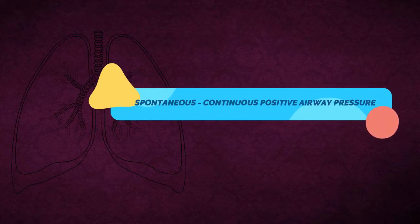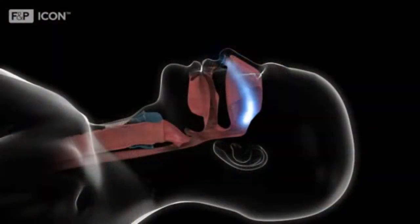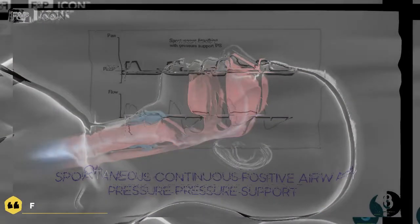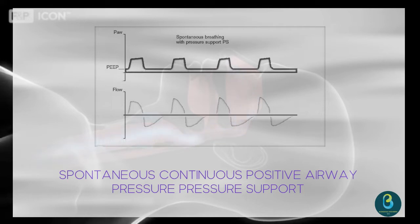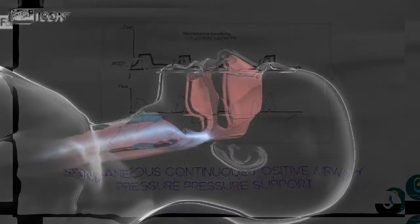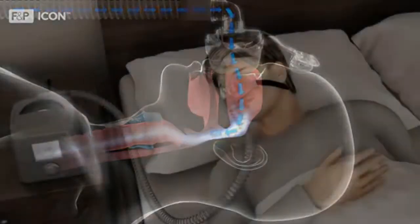Let's see the Spontaneous Continuous Positive Airway Pressure Support. In spontaneous CPAP, the patient breathes at the PEEP level. Compared to the atmospheric pressure, the airway pressure is increased during the complete breathing cycle — that is, during inspiration and expiration. If the patient is too weak to manage the complete breathing effort independently, there is the option of pressure support. Every detected inspiration attempt at PEEP level triggers a patient-triggered, flow-cycled, pressure-supported mandatory breath.